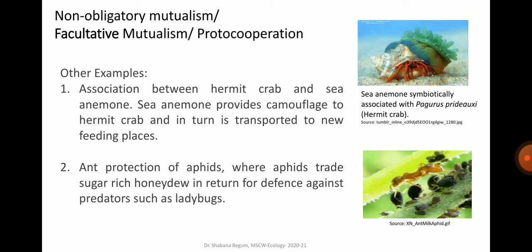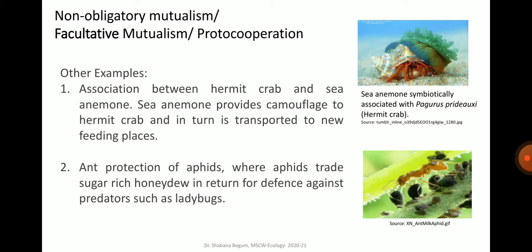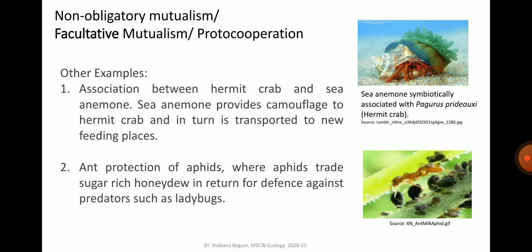The association between hermit crab and sea anemone is yet another example of facultative mutualism. The sea anemone provides camouflage to the hermit crab and in turn is transported to new feeding places. Sea anemones are found attached to the empty gastropod shells in which the hermit crab lives. The crab is protected by the sea anemone from enemies by its powerful stinging cells called nematocysts. In turn, the sea anemone is given free transportation by the hermit crab and has a change of feeding grounds. Moreover, whenever the crab feeds, floating particles of food are utilized by the sea anemone.